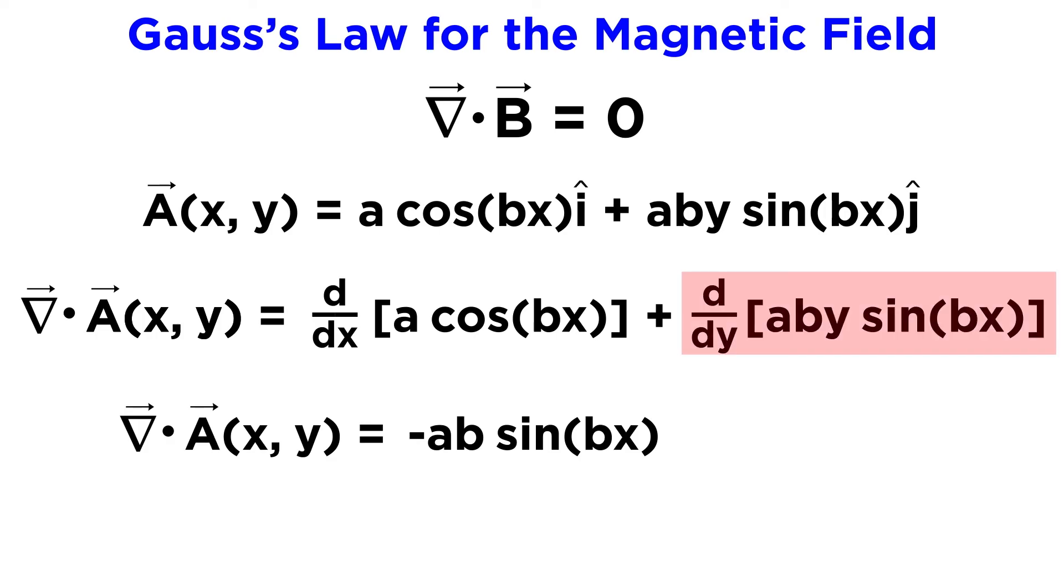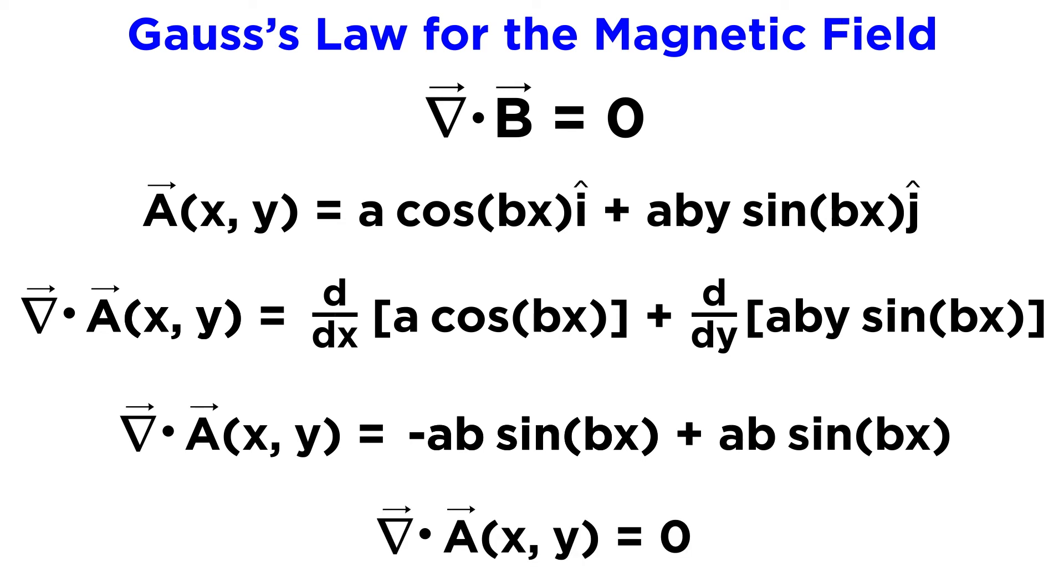For the second term, taking the derivative with respect to y, everything but y is a constant, so we just lose y and keep the rest, or ab sine bx. Adding these together, we do indeed get zero, which indicates that a could be a magnetic field.